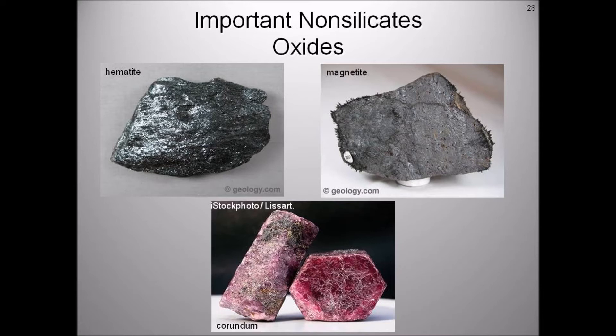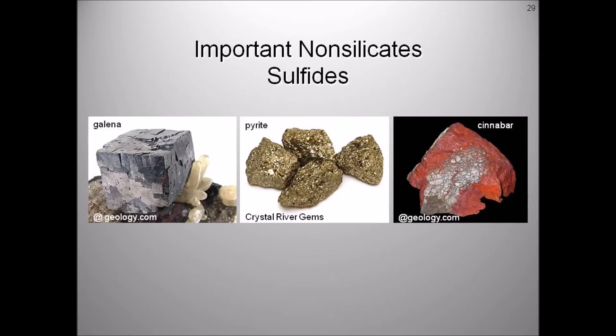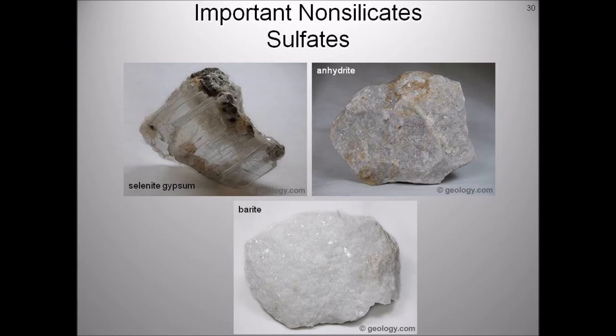The sulfide minerals are any members of a group of compounds of sulfur with one or more metals. Most of the sulfides are simple structurally, exhibit high symmetry in their crystal forms, and have many properties of metals, including metallic luster and electrical conductivity. They often are strikingly colored and have low hardness and high specific gravity. Three common sulfide minerals are galena, pyrite, and cinnabar. The sulfate minerals are a class of minerals that include the sulfate ion within their structure, and are any naturally occurring salts of sulfuric acid. The sulfate minerals occur commonly in three environments: primary evaporite depositional environments, as minerals in hydrothermal veins, and as secondary minerals in the oxidizing zones of sulfide mineral deposits. Some common sulfate minerals are gypsum, anhydrite, and barite.